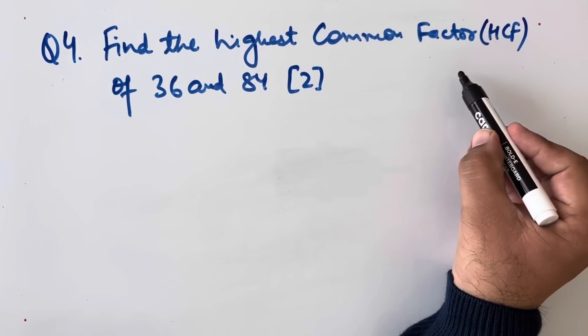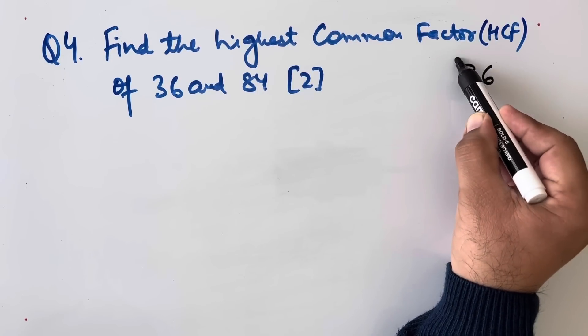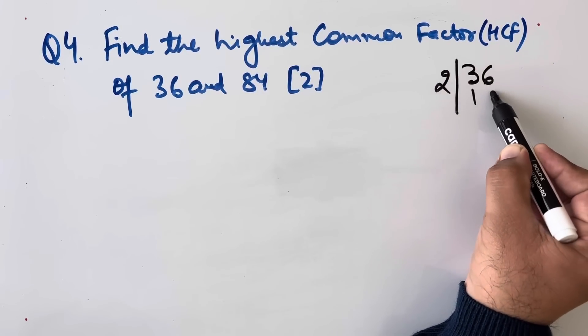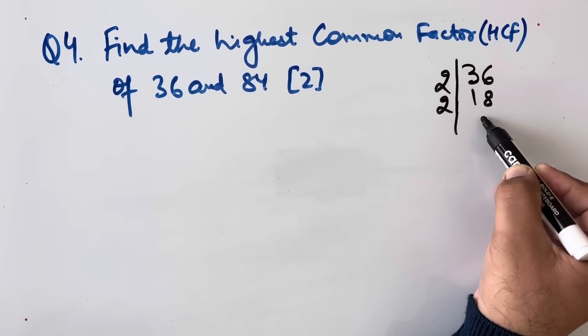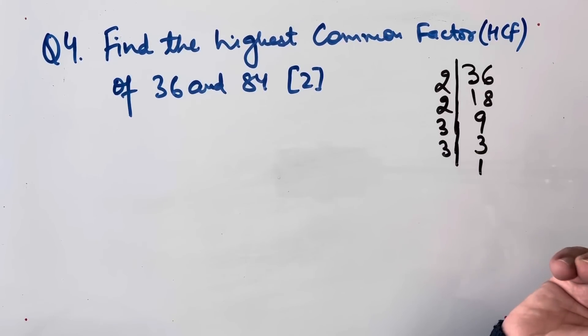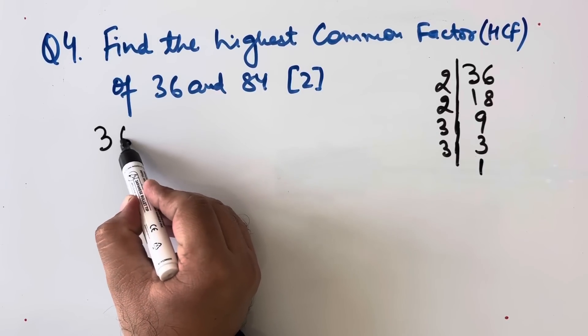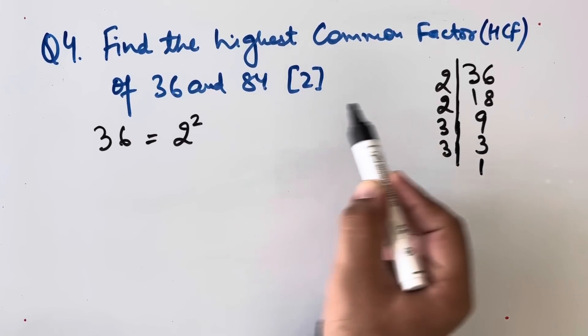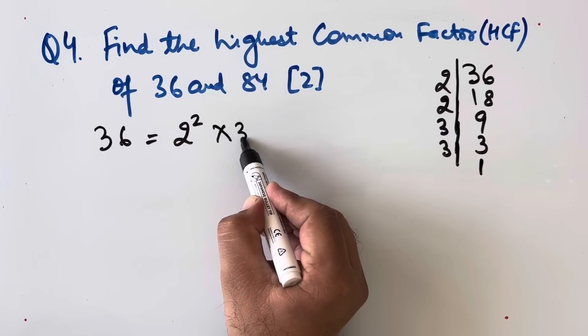So we will be writing 36. It goes with 18, then with 9, then we get 3 and 1. So 36 can be written as 2^2 × 3^2.